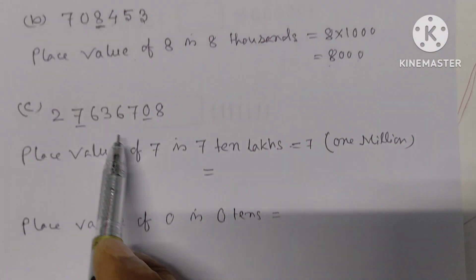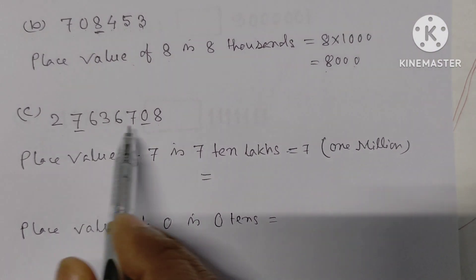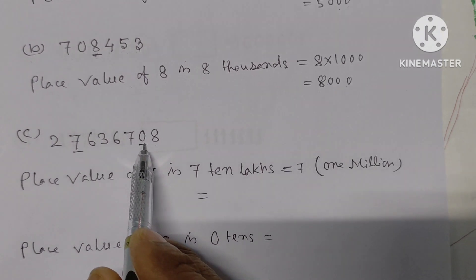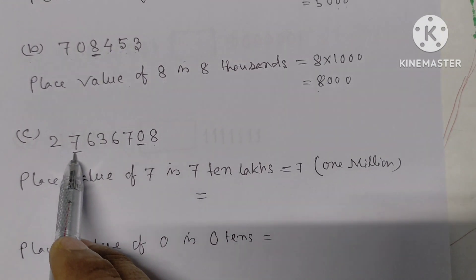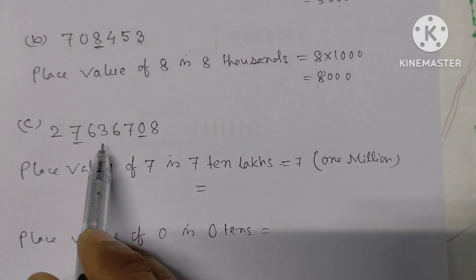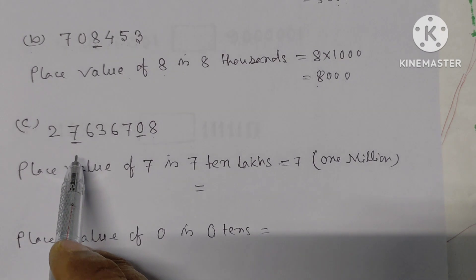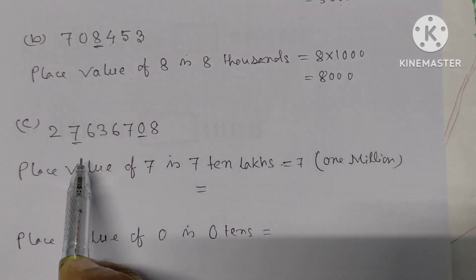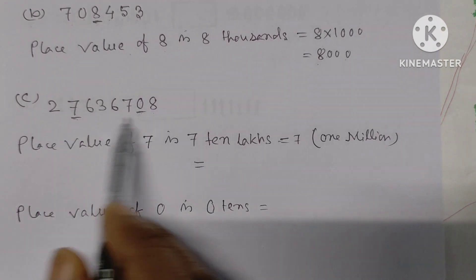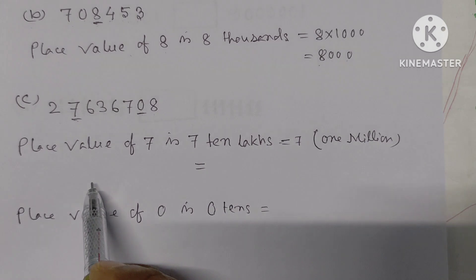Part C: The number is 2,76,36,708. We have to find the place value of the underlined digits 7 and 0 in this number.